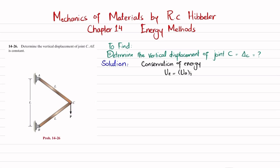Due to this external load, joint C will move downward covering distance delta C. The strain energy due to the external load equals one-half P times delta C. This external work transfers to internal work, so strain energy due to external load equals strain energy due to axial load. We will use this equation.